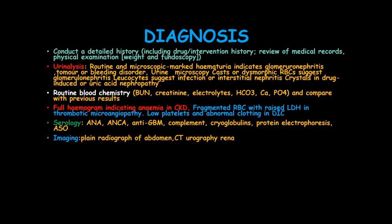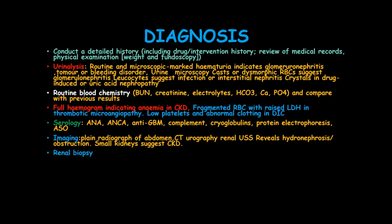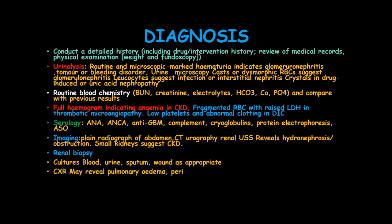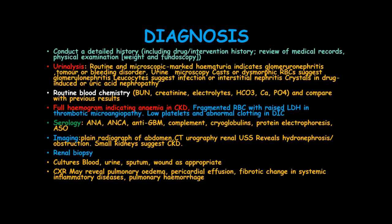Imaging includes a plain radiograph of the abdomen and CT urography. Renal ultrasound reveals hydronephrosis or obstruction, and small kidneys suggest chronic kidney disease. Renal biopsy can also be conducted. Cultures of blood, urine, sputum, and wound will be needed as appropriate. Chest X-ray may reveal pulmonary edema, pericardial effusion, fibrotic changes in systemic inflammatory diseases, and pulmonary hemorrhage.